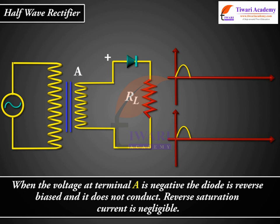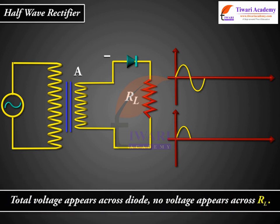When the voltage at terminal A is negative, the diode is reverse biased and it does not conduct. Reverse saturation current is negligible. Total voltage appears across the diode. No voltage appears across RL.